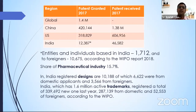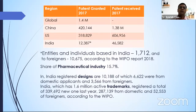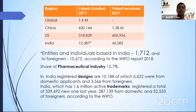Looking at patent data from 2017: globally 1.4 million patents were filed. China filed 4.2 lakh, the US filed around 3.18 lakh, and India had just 12,387 patents granted. You can see the vast difference between China, the US, and India. China received 1.38 million patent applications; the US received 6 lakh applications out of which 3 lakh were granted; India received 46,000 applications out of which 12,000 were granted.